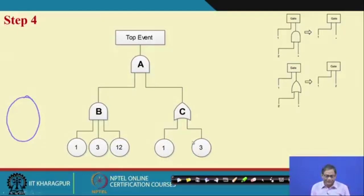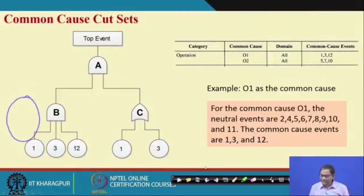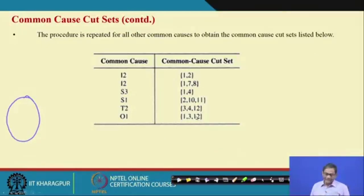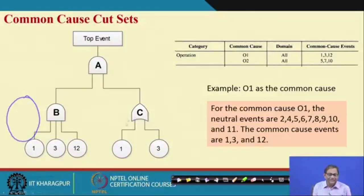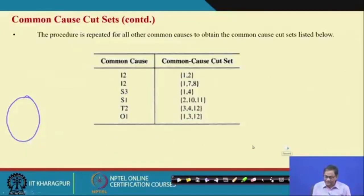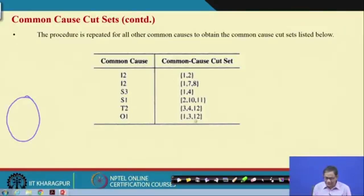After simplifying the entire fault tree with reference to O1, the resultant simplified tree yields 1, 3, 12 and 1, 3. Applying the MOCUS algorithm to develop cut sets from this simplified tree, the final common cause cut sets for O1 are: {1, 3} and {1, 3, 12}.